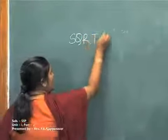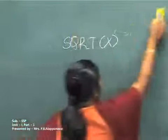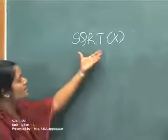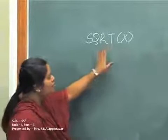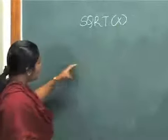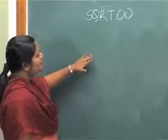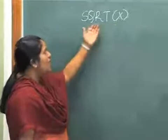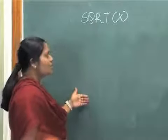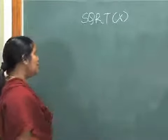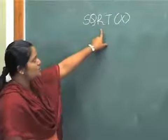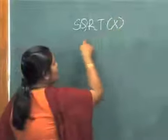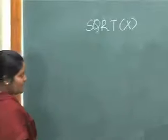Consider a subroutine sqrt(x) — this is a closed subroutine. If a programmer wishes to include this subroutine sqrt(x), which calculates the square root of a value, he has to have instructions written such that there is transfer of control to this subroutine sqrt, which calculates the square root of the given value, and whatever data is obtained is returned back to the main program. If more than one programmer wishes to use sqrt(x), they can do so.